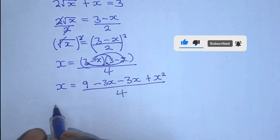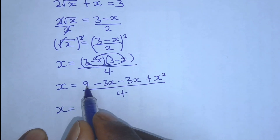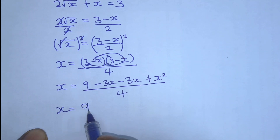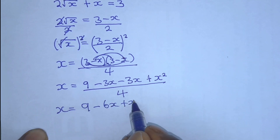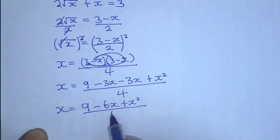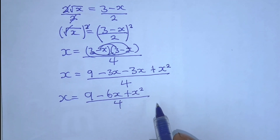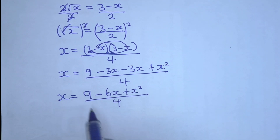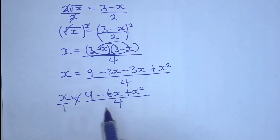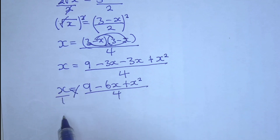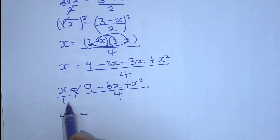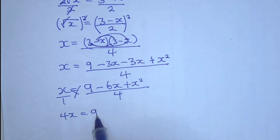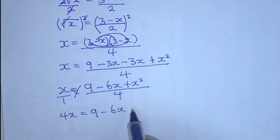And then, x is equal to — let's simplify the top — 9 minus 6x plus x squared, all over 4. Now from this step we can cross multiply: x times 4 gives us 4x, which is equal to 1 times 9 minus 6x plus x squared.